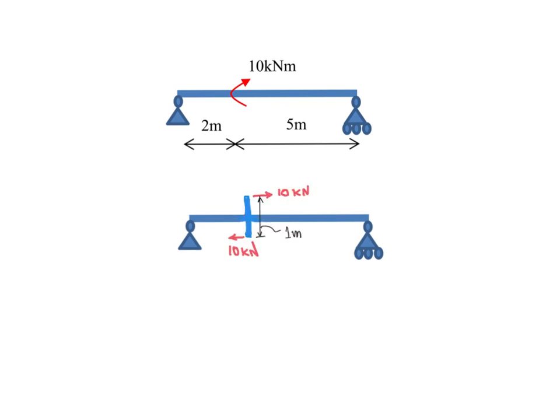One case could be two 10 kN forces acting in opposite directions at a distance of 1 meter, which could produce that 10 kN·m moment at that particular location.